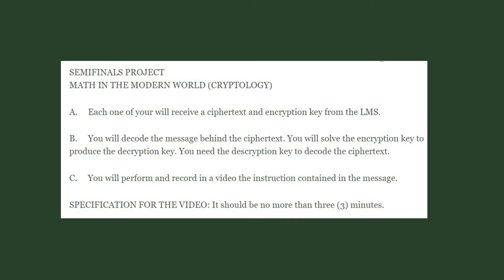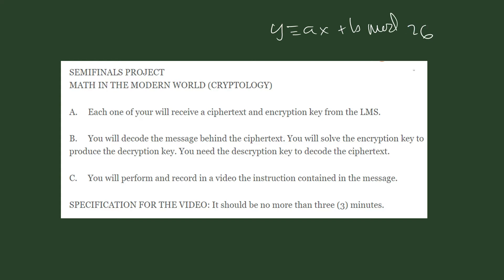For Cryptology, this is my students' major project. Each one of them will receive a ciphertext and an encryption key. They will decode the message behind the ciphertext, but in order to do that, they must first solve the encryption key. The encryption key is in the form of a linear congruence equation: Y is congruent to 8 times X plus B, modulo 26, where 26 stands for the number of letters in the English alphabet.